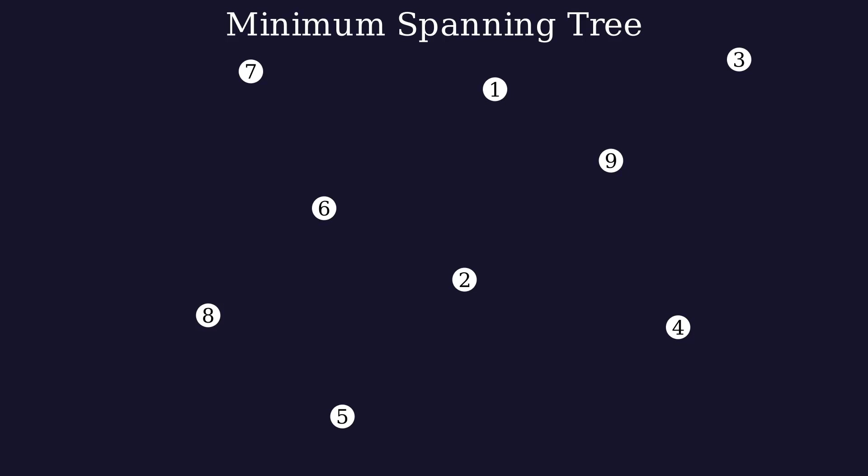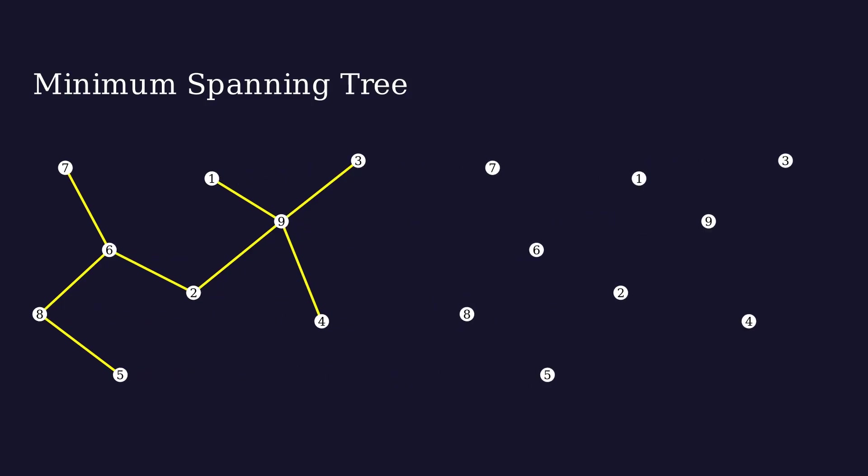We begin by selecting a city randomly and connecting it to the nearest city. Then we choose an unconnected city that's closest to any of the connected cities and link it. We do it until all cities are connected. We are guaranteed to get the smallest possible spanning tree using this method. To show that any path the salesman can choose cannot be shorter than this minimum spanning tree, we can consider this. If we were to remove a single edge from any path the salesman can take, what remains would be a tree, but it wouldn't be shorter than the minimum spanning tree.